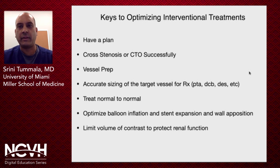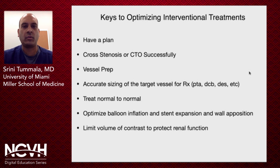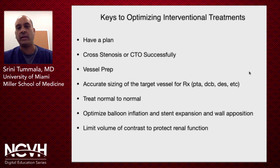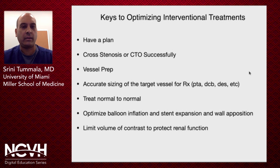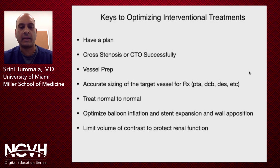We all know the keys to optimizing interventional therapies include multiple things. You have to have a plan, be able to cross the stenosis or a CTO successfully. Vessel prep is important, whether it's scoring balloons or atherectomy. Accurate sizing of the vessel being treated is very important, and in some cases can improve patency rates when sizing is optimized. We want to treat normal to normal, optimize balloon inflation, as well as stent expansion and wall apposition, and limit the amount of contrast to protect the patient's renal function.